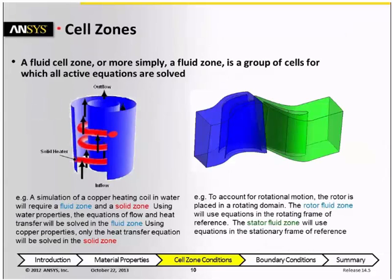Cell zones in Fluent can be specified as either fluid or solid zones. A fluid cell zone, which we just refer to as a fluid zone, is a group of cells where all active equations are solved, and a solid cell zone is a group of cells where it only solves the energy equation for conduction in the solid.